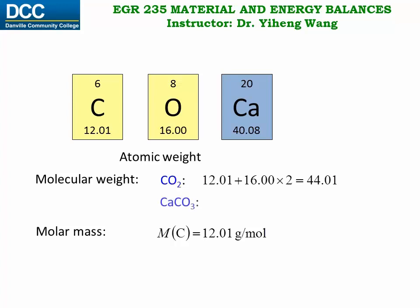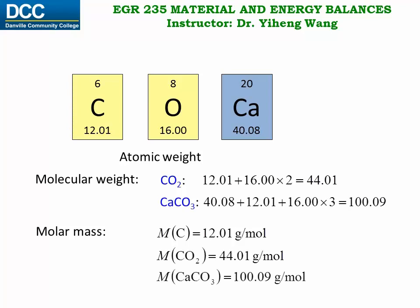For ionic compound calcium carbonate, its molecular weight can also be determined from the atomic weights of carbon, oxygen, and calcium. And their molar masses are 44.01 gram per mole and 109 gram per mole respectively. As you can see, the molecular weights and the molar masses have the same numerals.